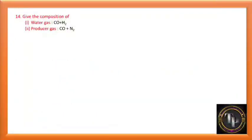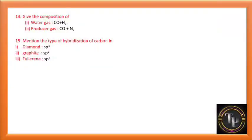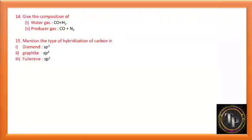Give the composition of water gas — water gas is a mixture of CO and H2. Producer gas is a mixture of CO and N2. Mention the type of hybridization of carbon in diamond — in diamond it is sp3. In graphite and fullerene it is sp2. There are three allotropes of carbon: diamond, graphite, and fullerene. Only diamond is sp3 hybridized; graphite and fullerene are sp2 hybridized.